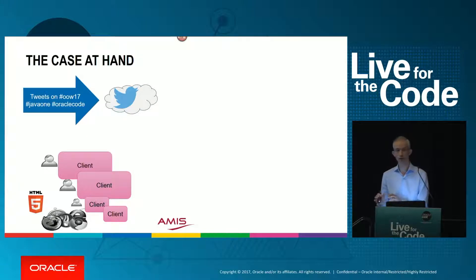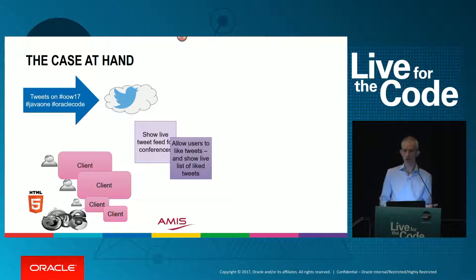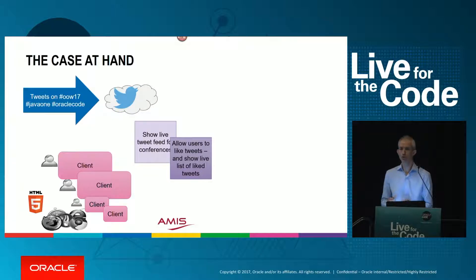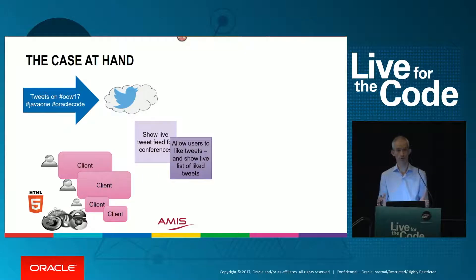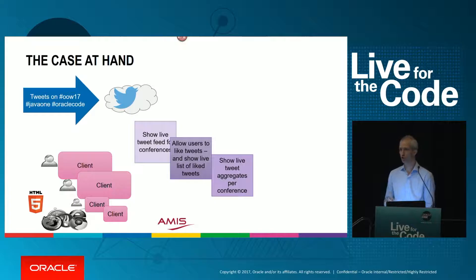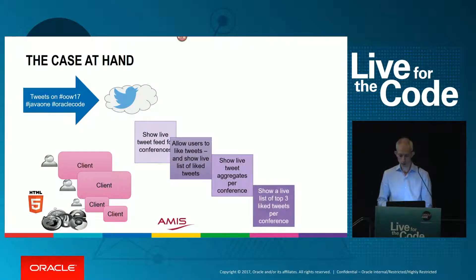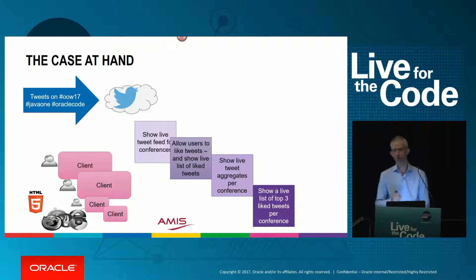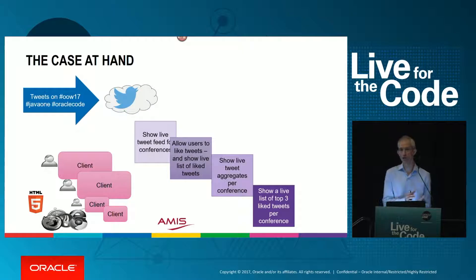In addition to a live tweet feed — that's step one — we will allow users of the application to like those tweets. If one user likes a tweet, all other users should be informed so they may like it themselves. We'll add live tweet aggregates, which in this case is the number of tweets per conference, and finally a top three of the most recently liked tweets per conference: every five minutes a refreshed top three of the best liked tweets in those last five minutes. That's the challenge.